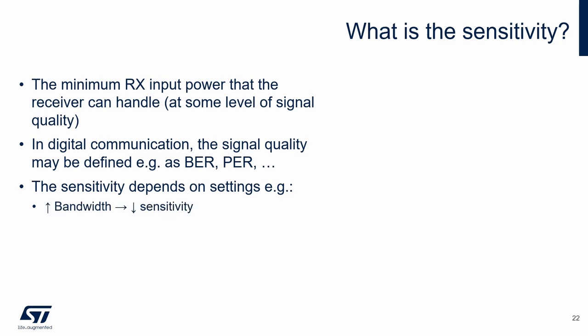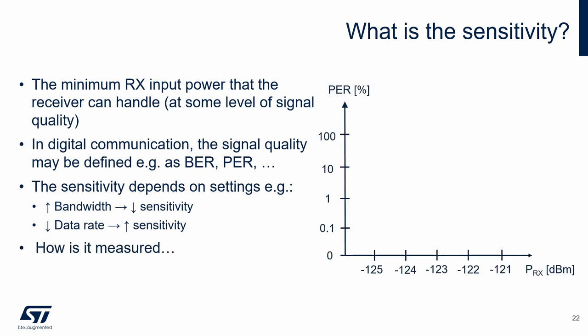For example, higher bandwidth degrades the sensitivity, while lower data rate improves it. We can explain sensitivity measurement with a chart: the horizontal axis is received power, the vertical axis is packet error rate. If we reduce the power, the packet error rate is zero up to a certain point, then starts to increase up to 100%. The sensitivity level is the received power at a certain level of packet error rate. We use 1% packet error rate — in this case the sensitivity level is minus 123 dBm.